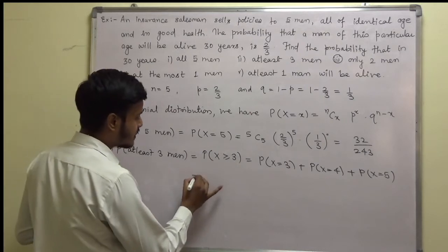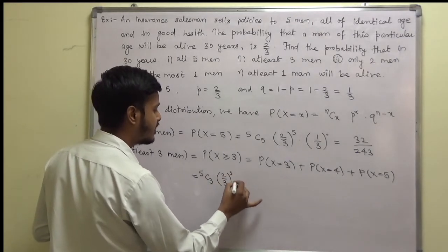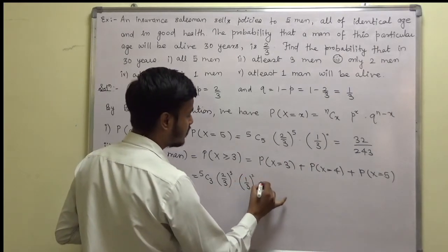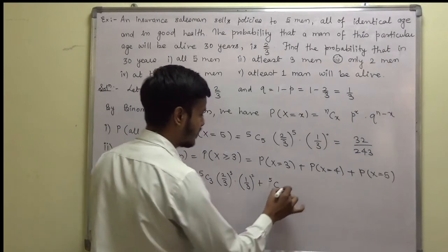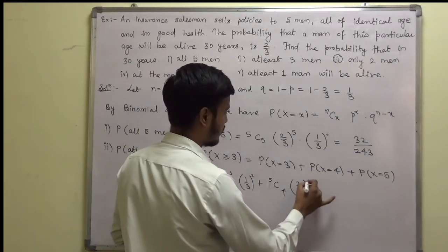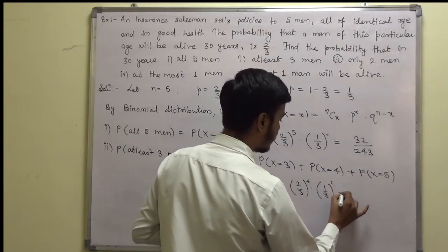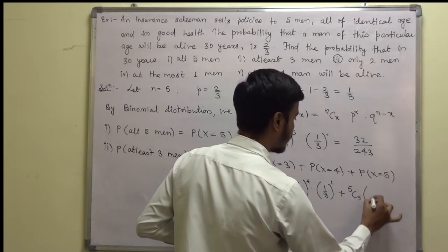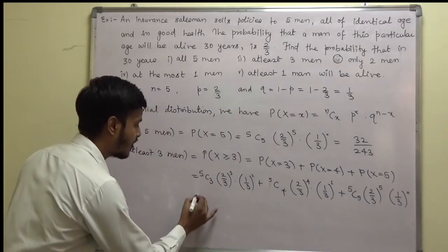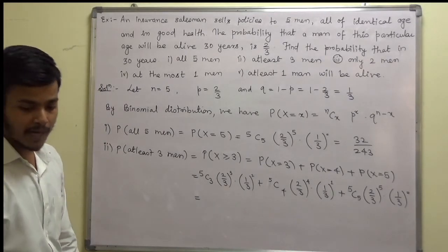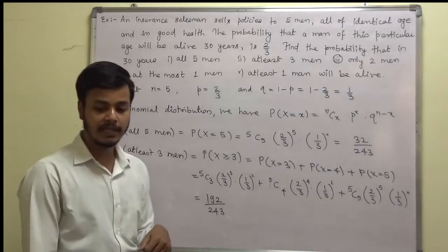Applying the formula: 5C3 times (2/3) to the power 3 times (1/3) to the power 2, plus 5C4 times (2/3) to the power 4 times (1/3) to the power 1, plus 5C5 times (2/3) to the power 5 times (1/3) to the power 0. Solving this, the probability comes out to be 192/243.